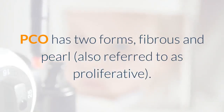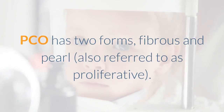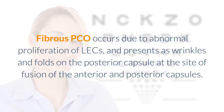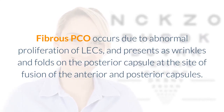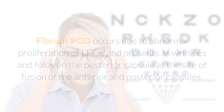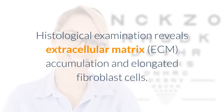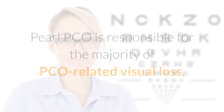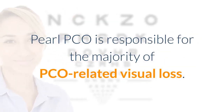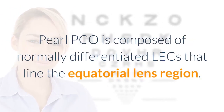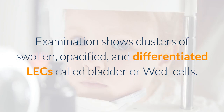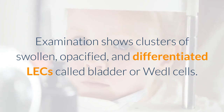PCO has two forms: fibrous and pearl, also referred to as proliferative. Fibrous PCO occurs due to abnormal proliferation of LECs, and presents as wrinkles and folds on the posterior capsule at the site of fusion of the anterior and posterior capsules. Histological examination reveals extracellular matrix accumulation and elongated fibroblast cells. Pearl PCO is responsible for the majority of PCO-related visual loss and is composed of normally differentiated LECs that line the equatorial lens region. Examination shows clusters of swollen, opacified, and differentiated LECs called bladder or Weddell cells.